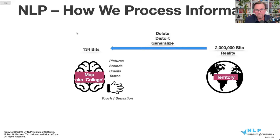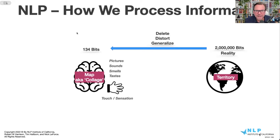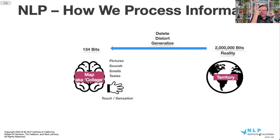We make collages in our mind — maps about what's going on in the world. And if you know NLP, you know that we delete tons of information, distort tons of information, and generalize tons of information. If something's not important, our mind just filters it out. I never noticed pregnant women until my wife became pregnant. Many people don't notice certain cars until they buy that car — and then you see it everywhere you go.